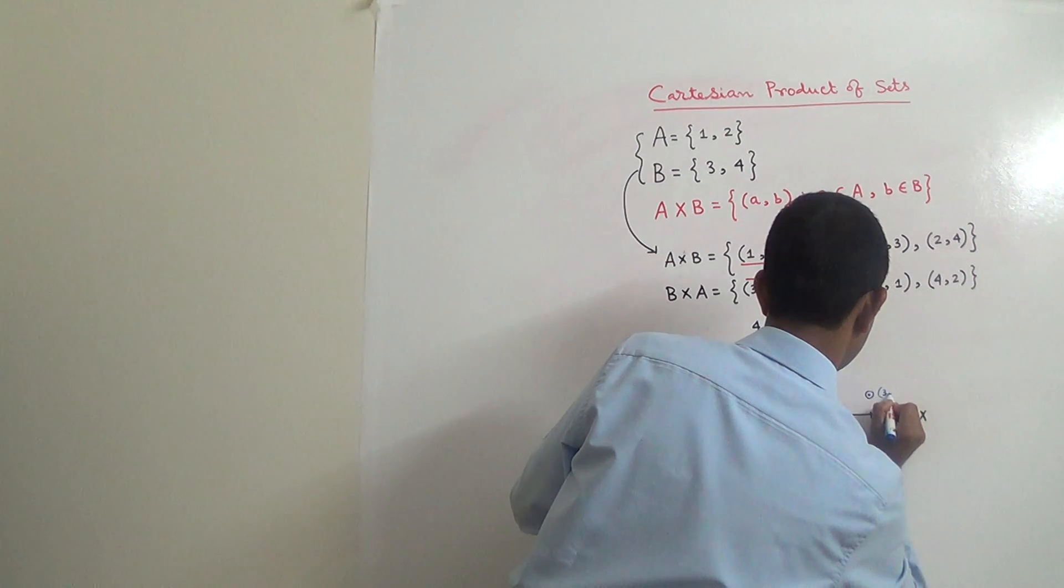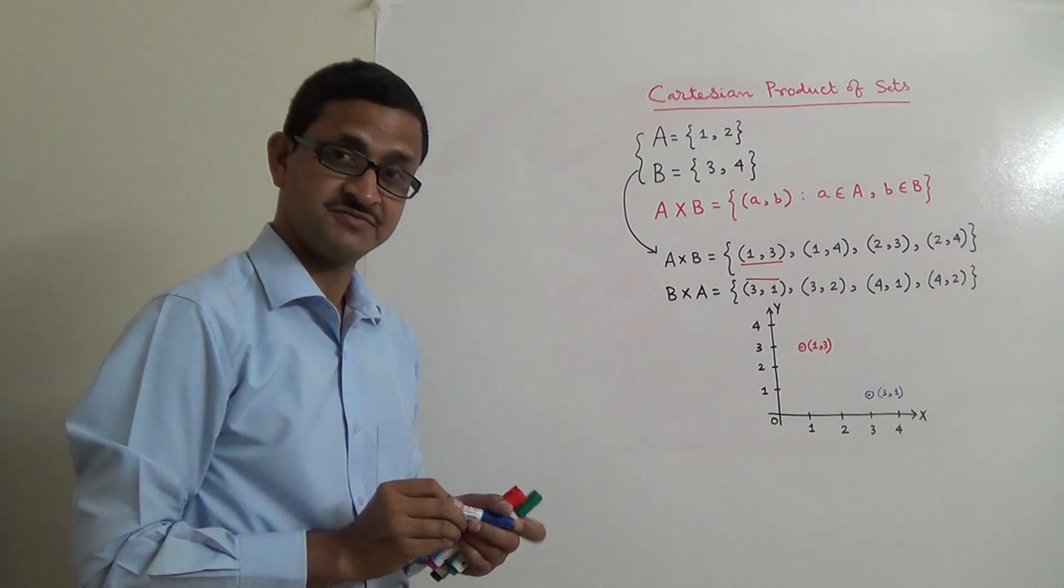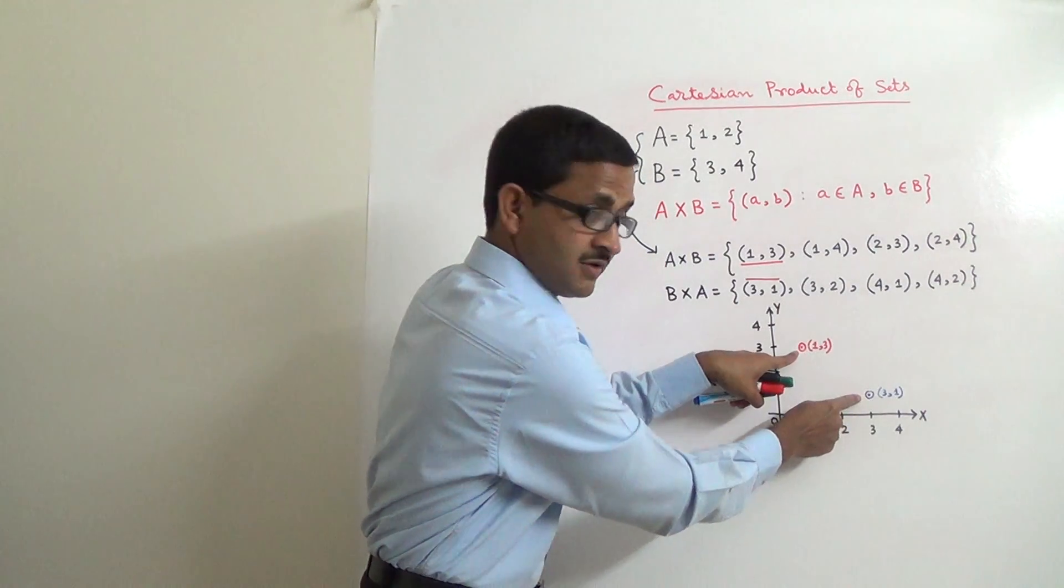So, this is (3,1). These two points are different. (1,3) and (3,1). These two are different.